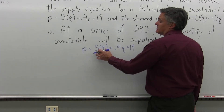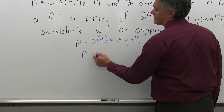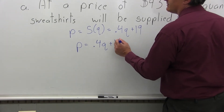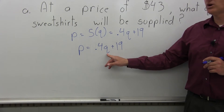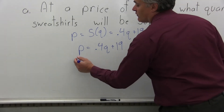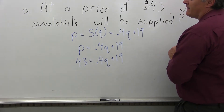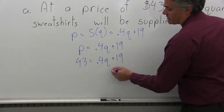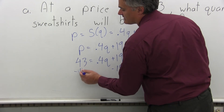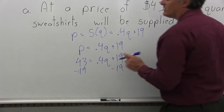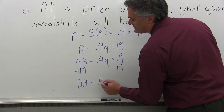The S(Q) just identifies this as the supply equation as opposed to the demand. Once I know I've chosen the correct equation, I'll just write P equals .4Q plus 19. The $43 in the question is a price, so I put in 43 for P and solve for Q. So 43 equals .4Q plus 19. Now get the Q by itself — subtract 19 on both sides. Positive 43 minus 19 gives 24, and on the right side I have .4Q.